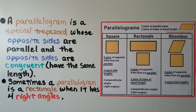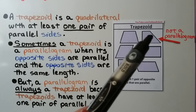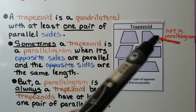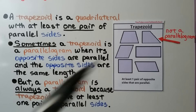A parallelogram is a special trapezoid because a trapezoid has to have at least one pair of parallel sides, and the parallelogram goes above and beyond that by having two pairs. A trapezoid is a quadrilateral with at least one pair of parallel sides, and sometimes a trapezoid is a parallelogram when its opposite sides are parallel and the same length. But a parallelogram is always a trapezoid. The shape shown here is not a parallelogram because the left and right sides aren't parallel — only the top and bottom are — so it's a trapezoid but not a parallelogram.